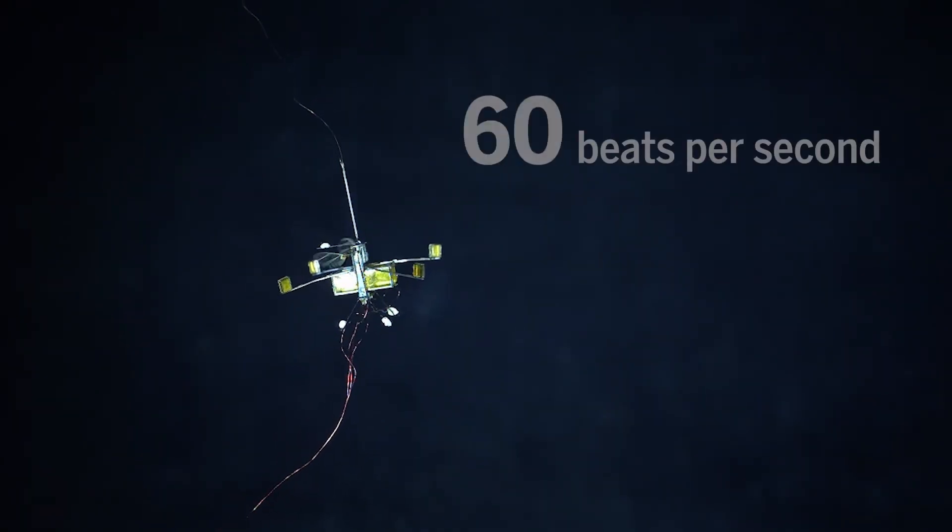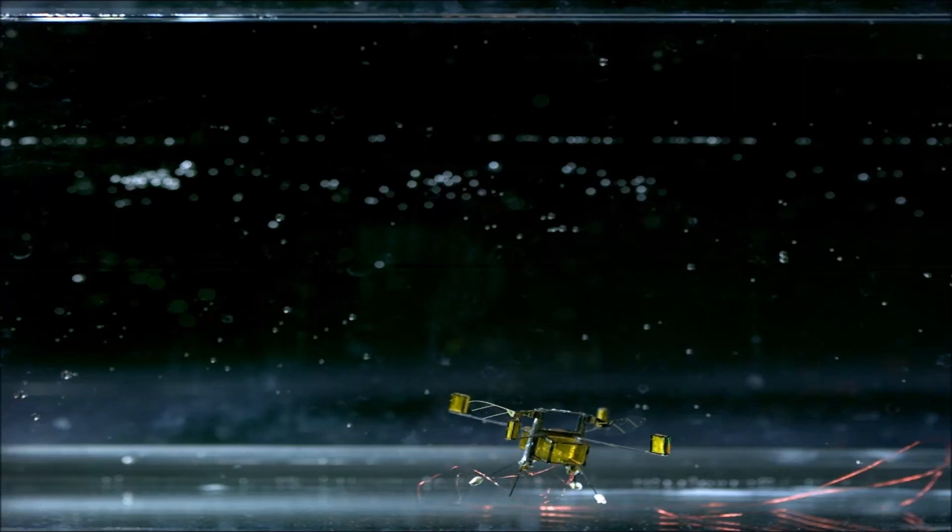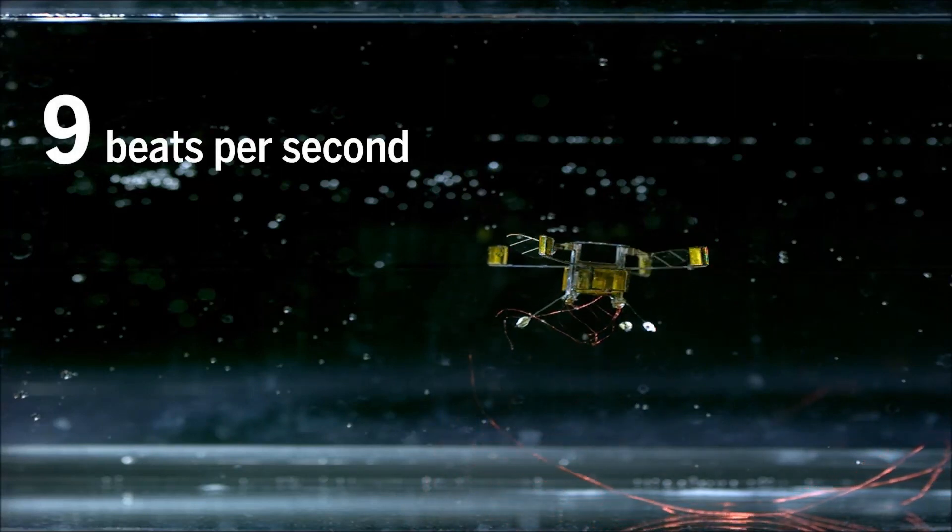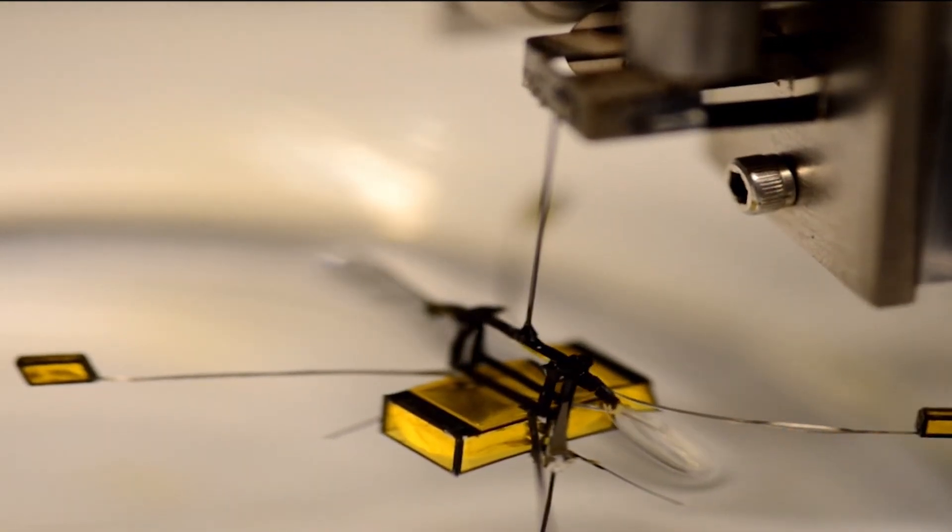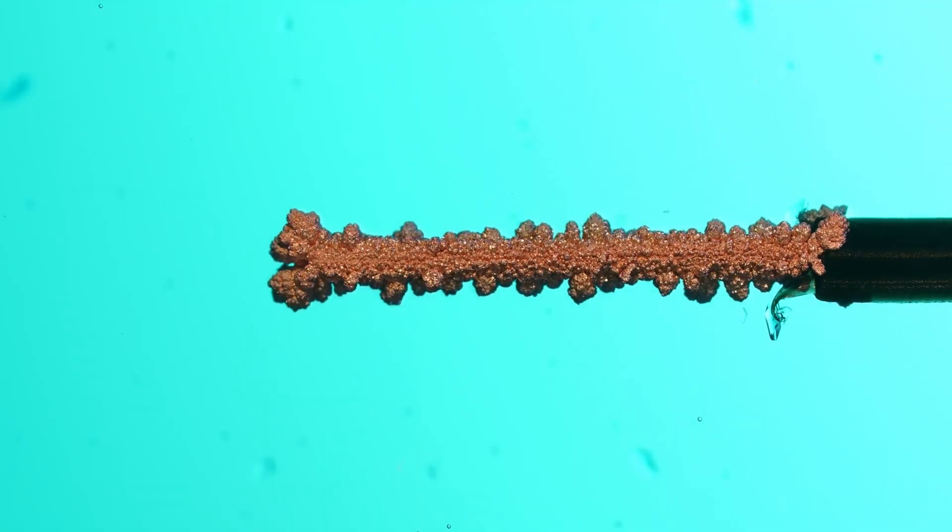Pollination is essential for plants to reproduce, and about 75% of the world's leading food crops rely on pollinators like bees. Without them, our food production and biodiversity would be severely impacted. But with the robot bee, we have a potential solution to this problem.